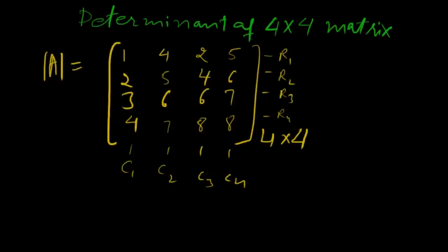Hello dear students, today we will find a 4×4 matrix determinant. This is a 4×4 matrix because it has four rows (row 1, row 2, row 3, row 4) and four columns (column 1, column 2, column 3, and column 4). To find the determinant of a 4×4 matrix is a little difficult, but if you